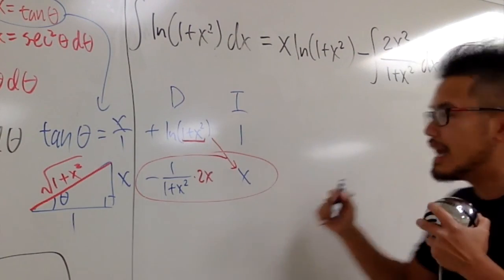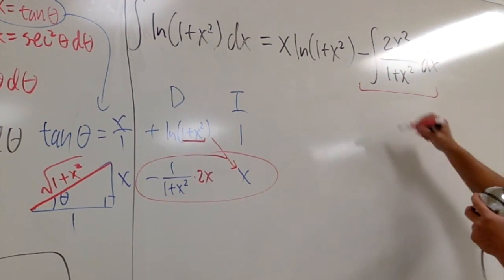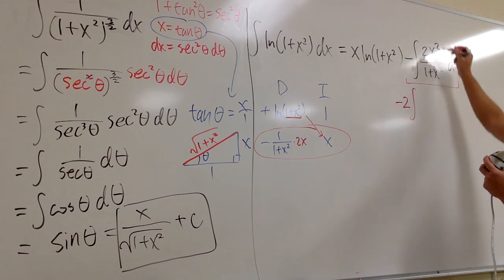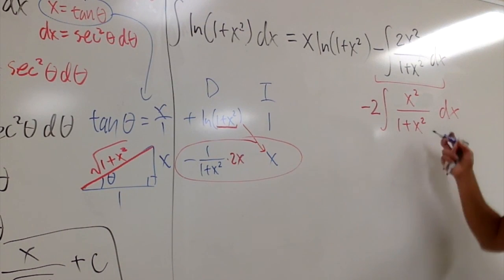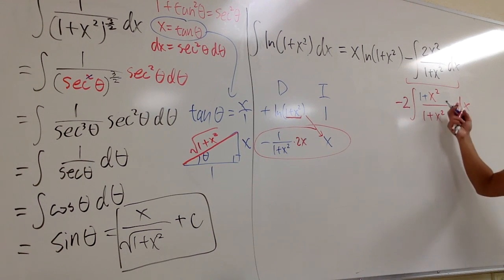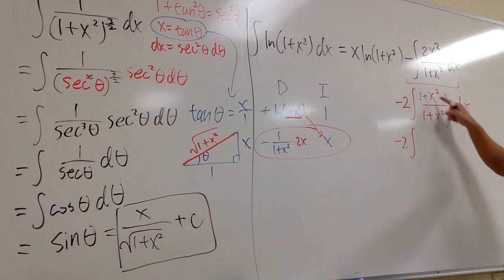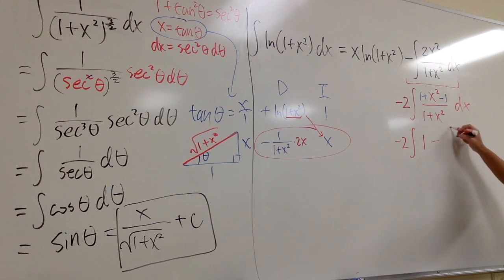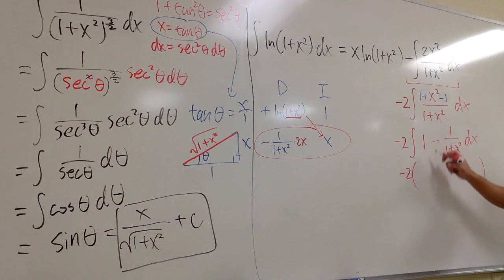After one integration by parts, we have an integral we can actually do. We pull the 2 to the front: negative 2 times the integral of x squared over (1 plus x squared) dx. This is a rational function where the degree on top equals the degree on bottom. Rather than long division, we add and subtract 1 in the numerator: x squared over (1+x²) equals 1 minus 1/(1+x²). The integral of 1 is x, and the integral of 1/(1+x²) is inverse tangent of x, with a minus sign.